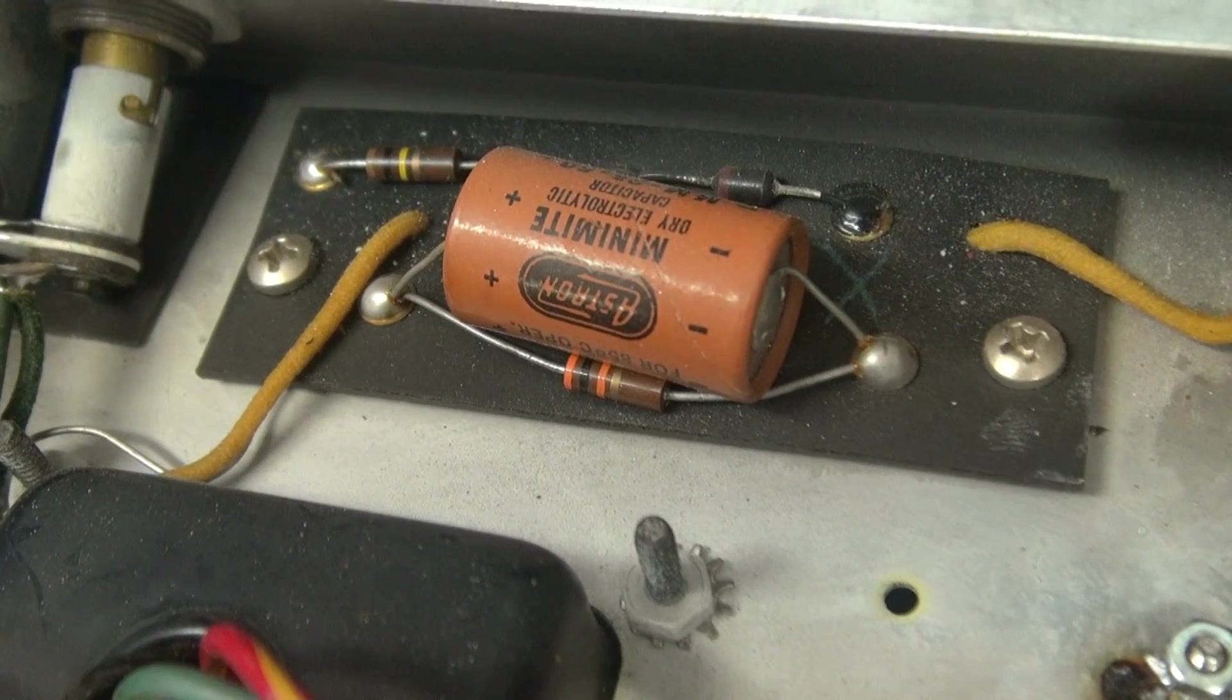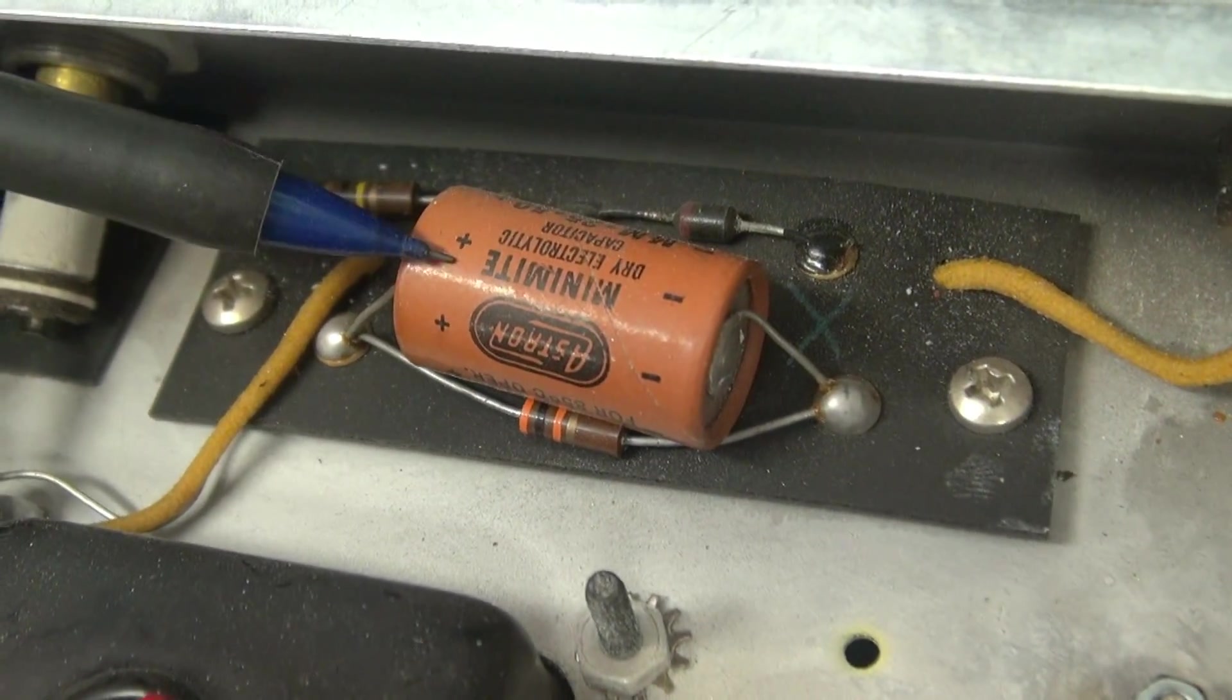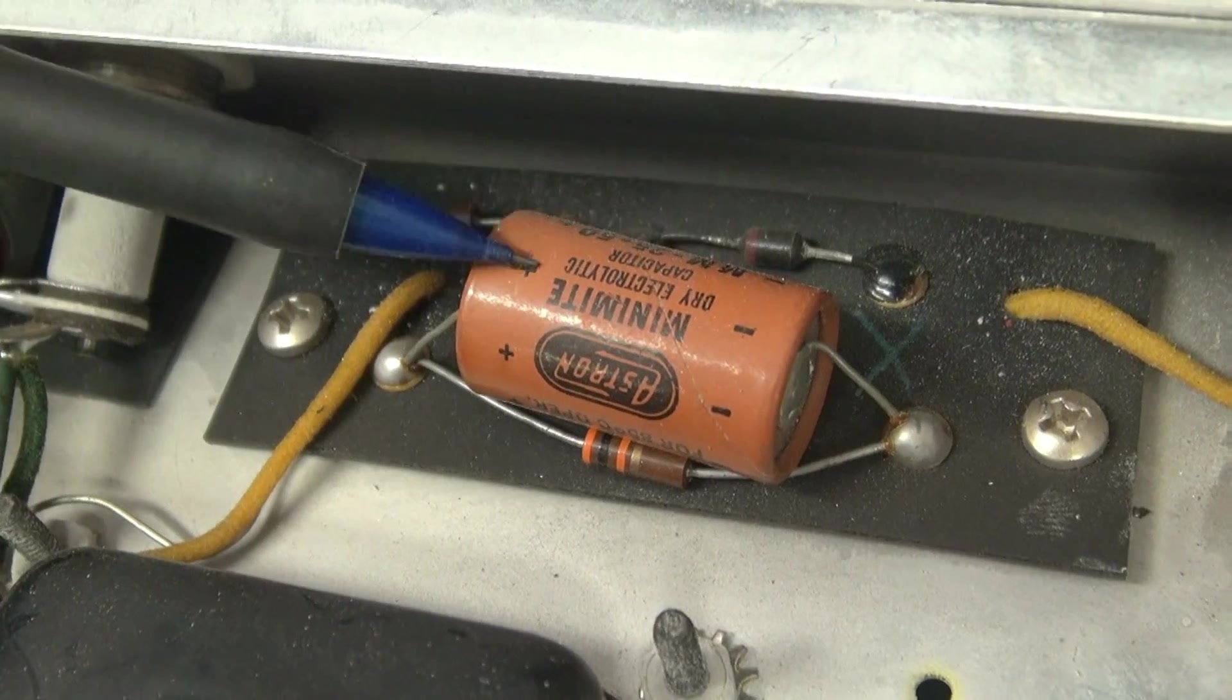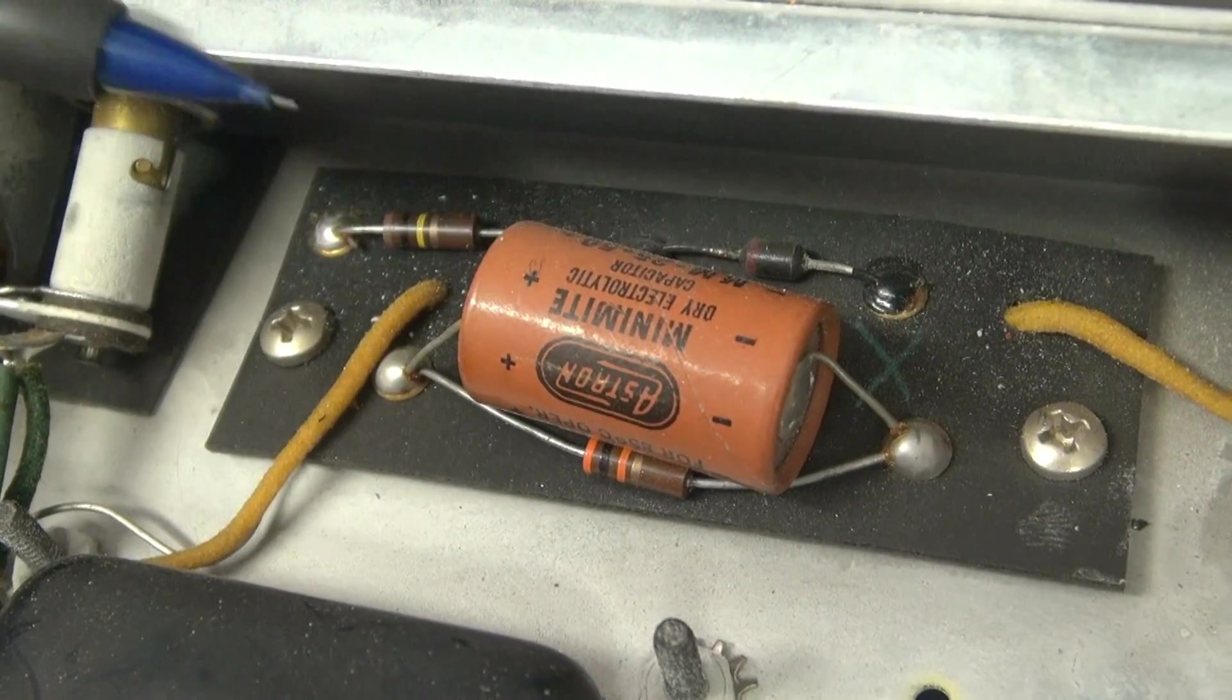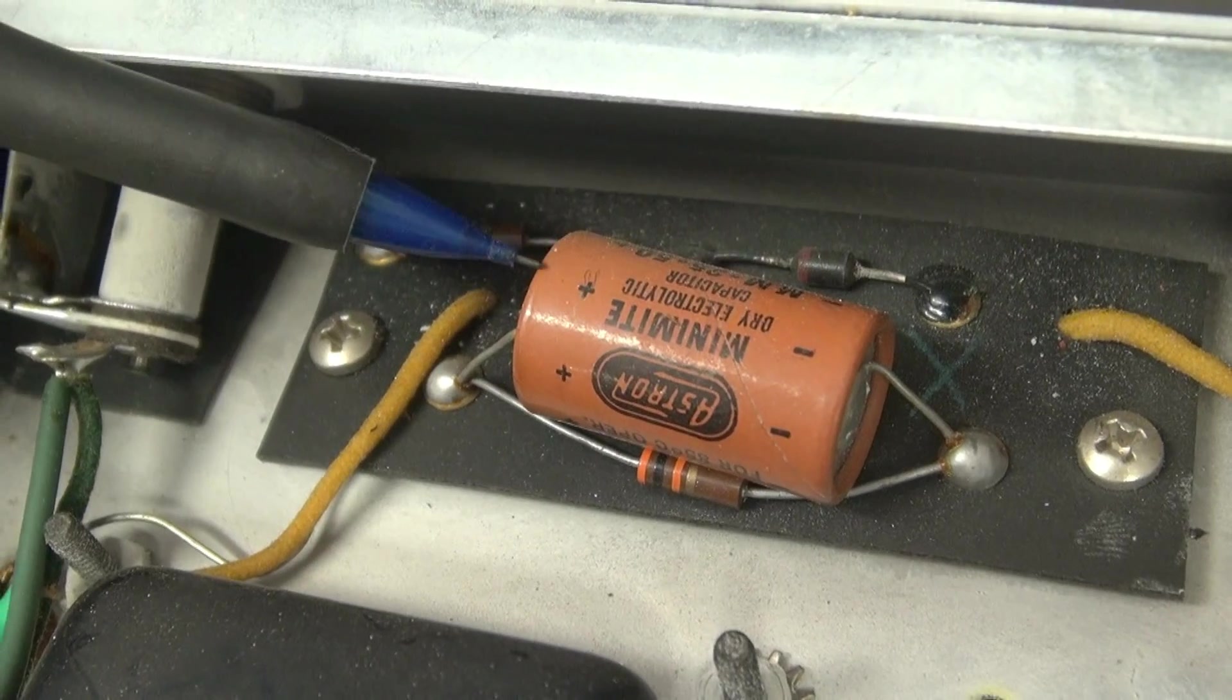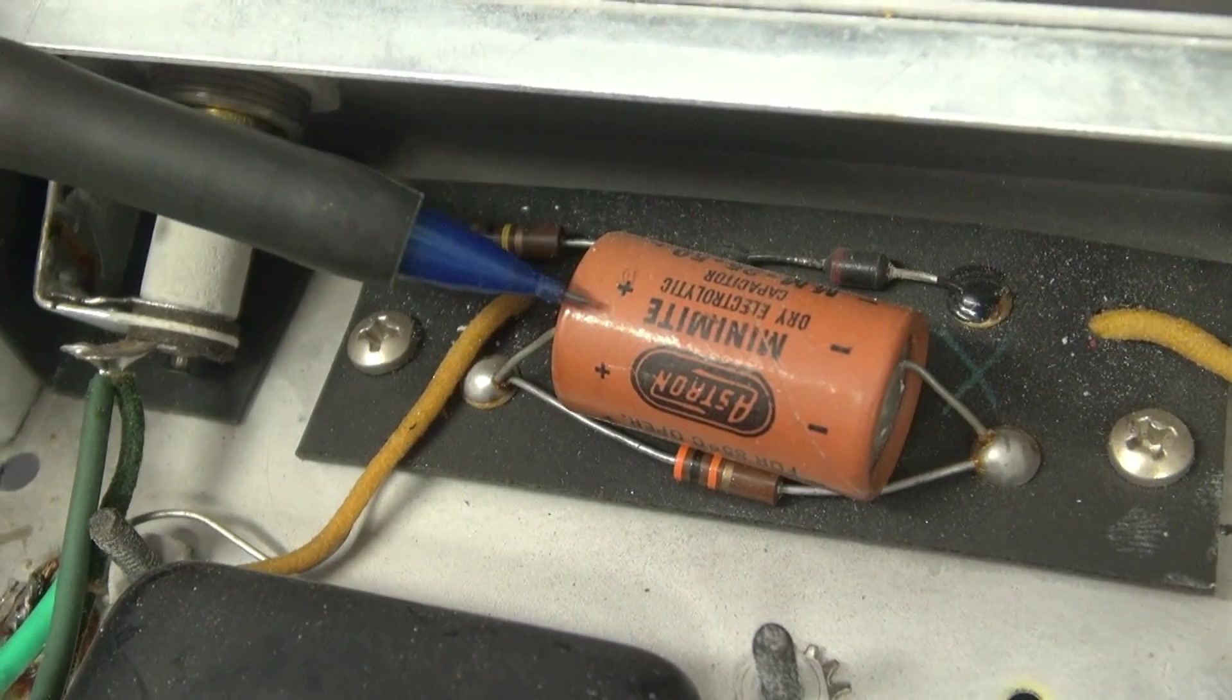Now here's the other thing that is a must to replace, and that's this cap. This is your negative bias cap. If that thing dries out, it'll eat your output tubes. It'll glow cherry red. And you'll be like, man, why didn't I spend 50 cents and change that cap? So we're going to do that right now.